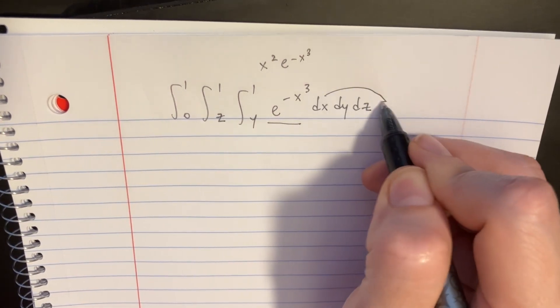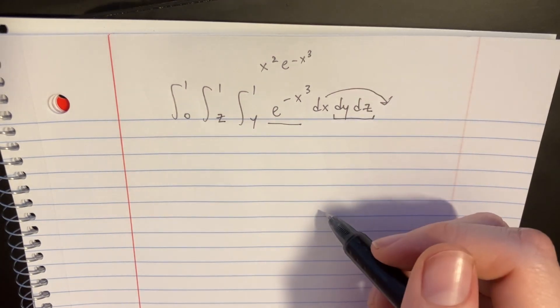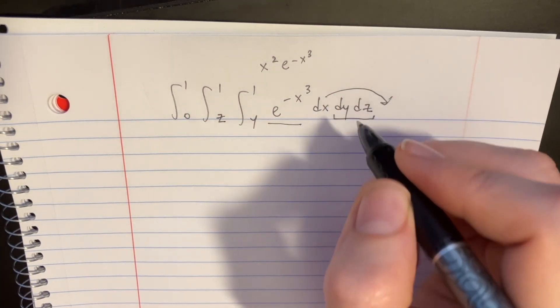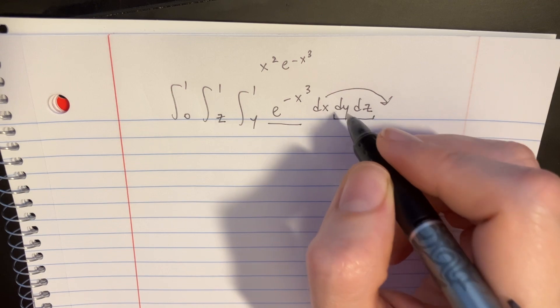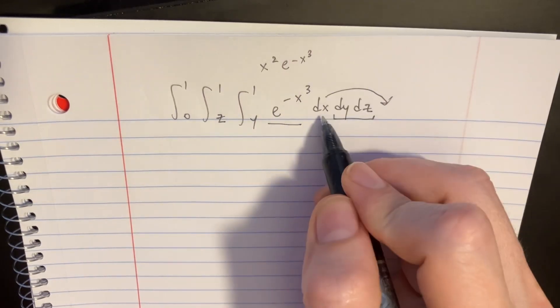In order to do that, we might want to push this over here because, look, we have two other dy's. If we just move that over there, then we'll be able to put two integrals, like two x's in there, and then we can integrate this easily.